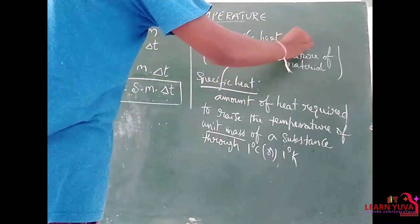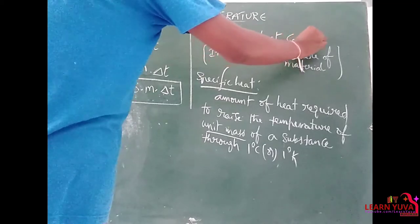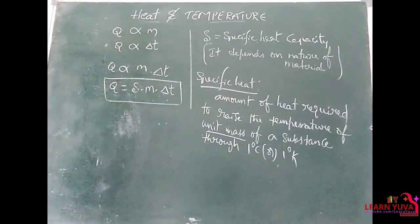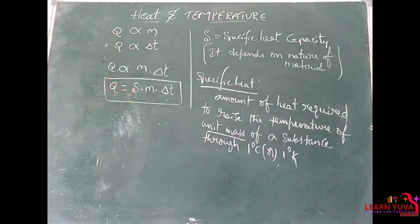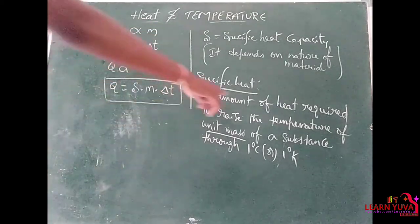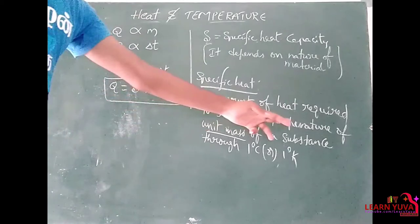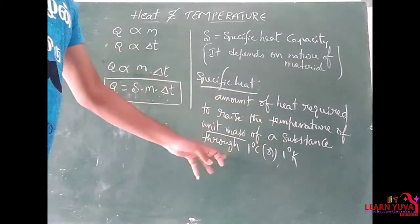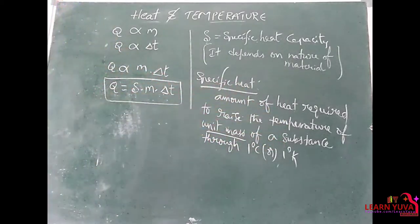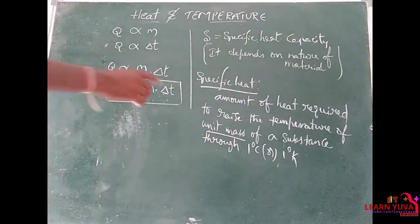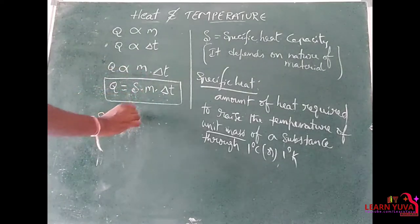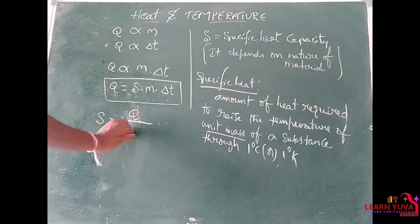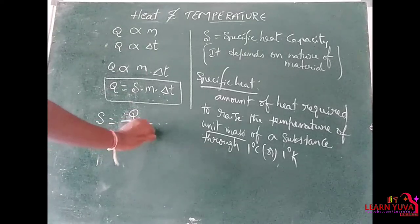Specific heat can also be called specific heat capacity — both terms are the same. From the equation Q = SmΔT, we get that specific heat capacity S is equal to Q divided by m into delta T.